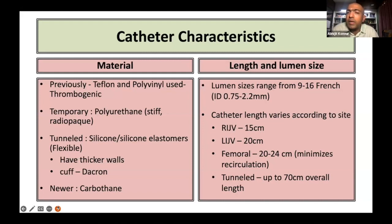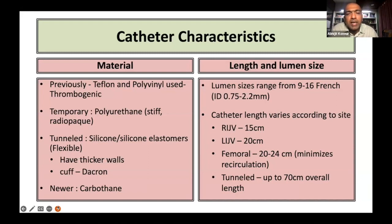The length and lumen size are very important for a nephrologist. The lumen sizes are usually from 9 to 16 French, and the internal diameter is usually anywhere from 0.75 to 2.2 millimeters. The catheter length varies according to its function and the site where it is inserted. A right internal jugular vein catheter will be around 15 centimeters in length, a left internal jugular vein catheter around 20 centimeters, a femoral catheter around 20 to 24 centimeters, and a tunnel catheter from the femoral can be anywhere from 50 to 70 centimeters in length.